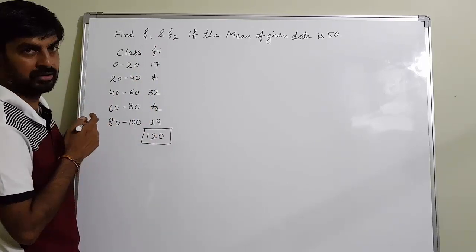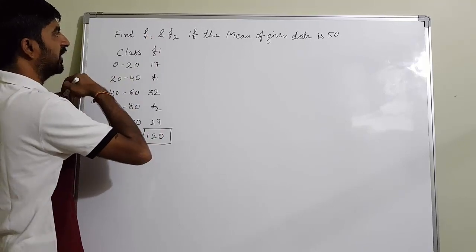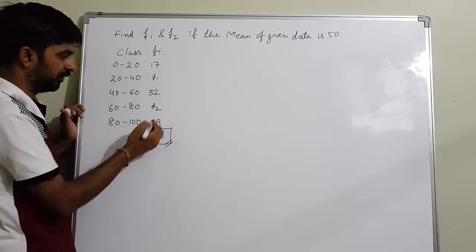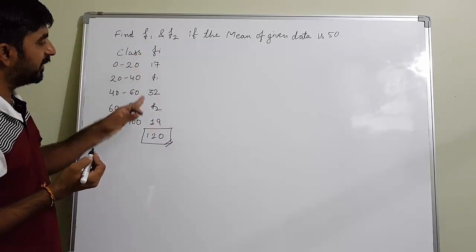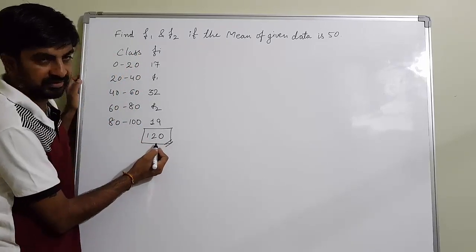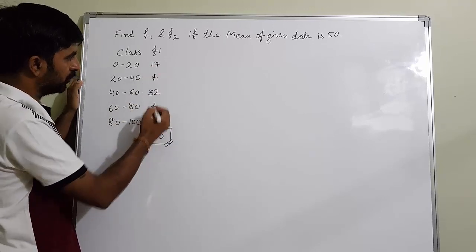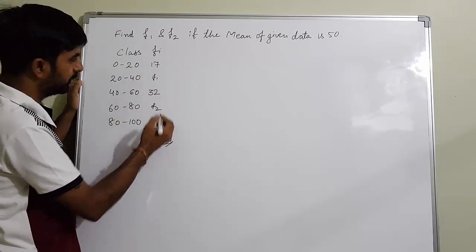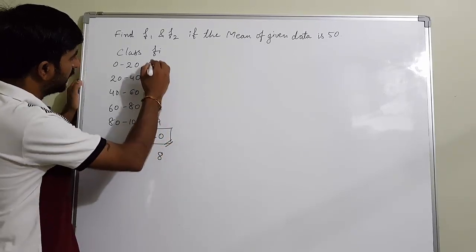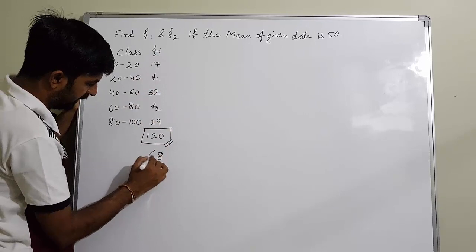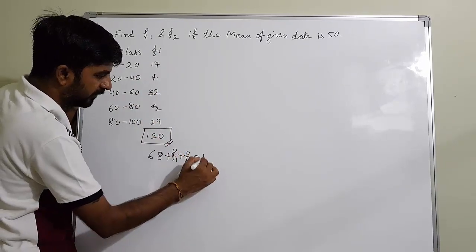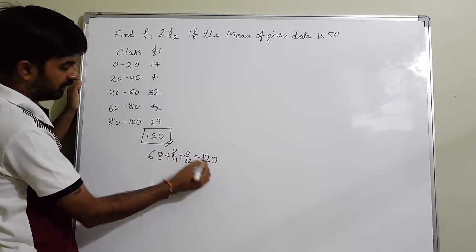Whenever two missing frequencies are there, they will compulsory give you the sum of the frequencies, because you will get one equation from that. So let us add: 7 plus 2 is 9, plus 9 is 18, carry 1... total is 68. So 68 plus f1 plus f2 equals 120, which is given.